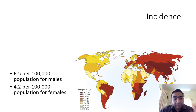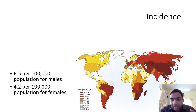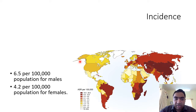Continuing with the epidemiology, the incidence of esophageal cancer is more common in males compared to females. Looking at the heat map, the amount of esophageal cancer is more common in Asia, southern Africa, and Latin American countries, whereas in the American and western countries the total incidence is less.